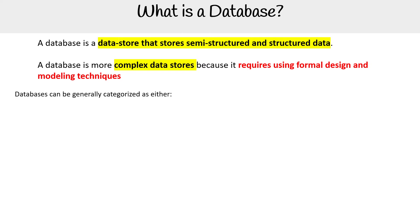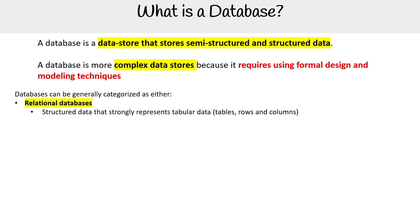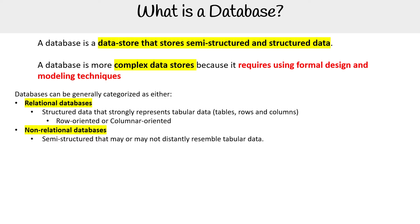Databases can be generally categorized as either relational databases — structured data that strongly represents tabular data, so tables, rows and columns — and they're generally either row-oriented or columnar-oriented. When we talk about non-relational databases, we're looking at semi-structured data that may or may not distantly resemble tabular data.